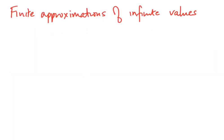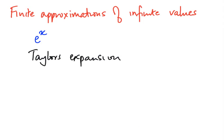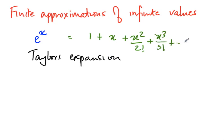Let us look at the first class of problems — those arising because of finite approximations of infinite values. Suppose we want to compute e to the power x. One way is to use the Taylor's expansion, which says that e^x equals 1 plus x plus x² divided by 2 factorial, plus x³ divided by 3 factorial, and so on. You have an infinite series of the form x^n divided by n factorial, and in the limit this infinite series gives us the value of e^x.